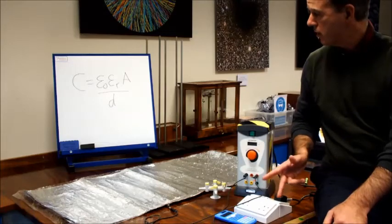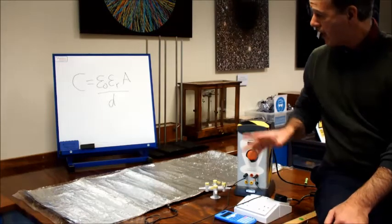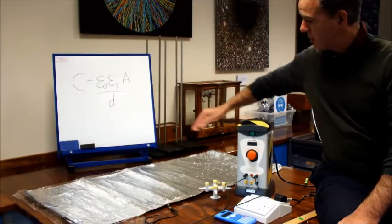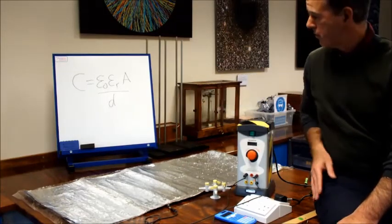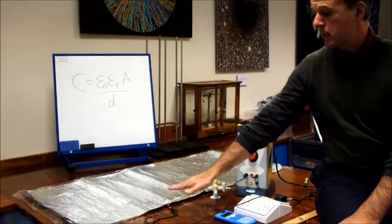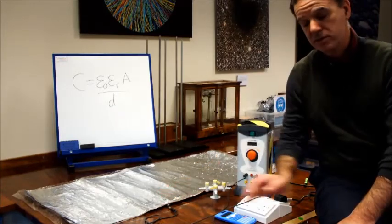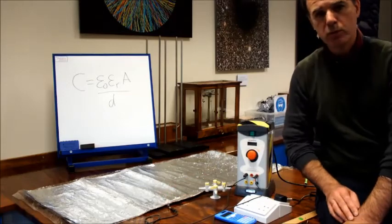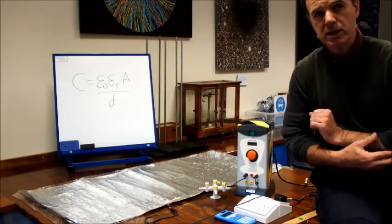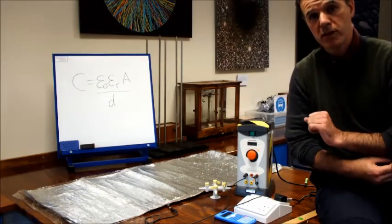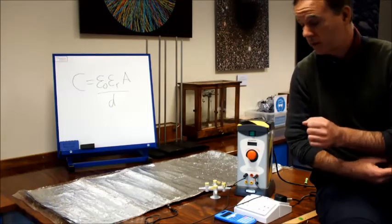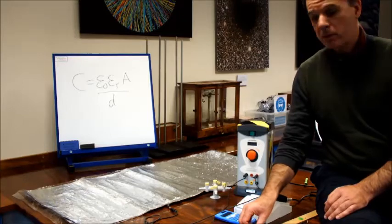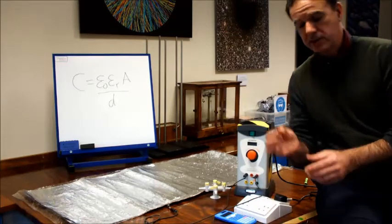The A is the area of the plates—this is about 1 meter by about 0.5 meters—and d is the plate separation, which in this case is the thickness, approximately the thickness of the cling film, which we reckon is about 10 microns, so about 1 times 10 to the minus 5 meters. So you can try and work out what the capacitance of this capacitor is. It's round about 1 microfarad as it turns out, which is about exactly the same as this one.